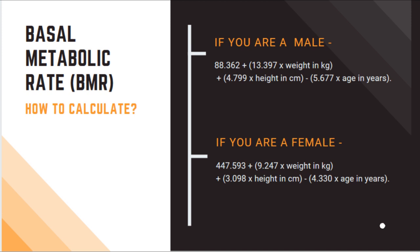On the board you can see two different formulae — one is for males and one is for females. You just need to copy it down on a piece of paper and fill in your details. I will just read out one formula to you. For a male, it is: 88.362 plus 13.397 multiplied by weight in kilograms, plus 4.799 multiplied by height in centimeters.